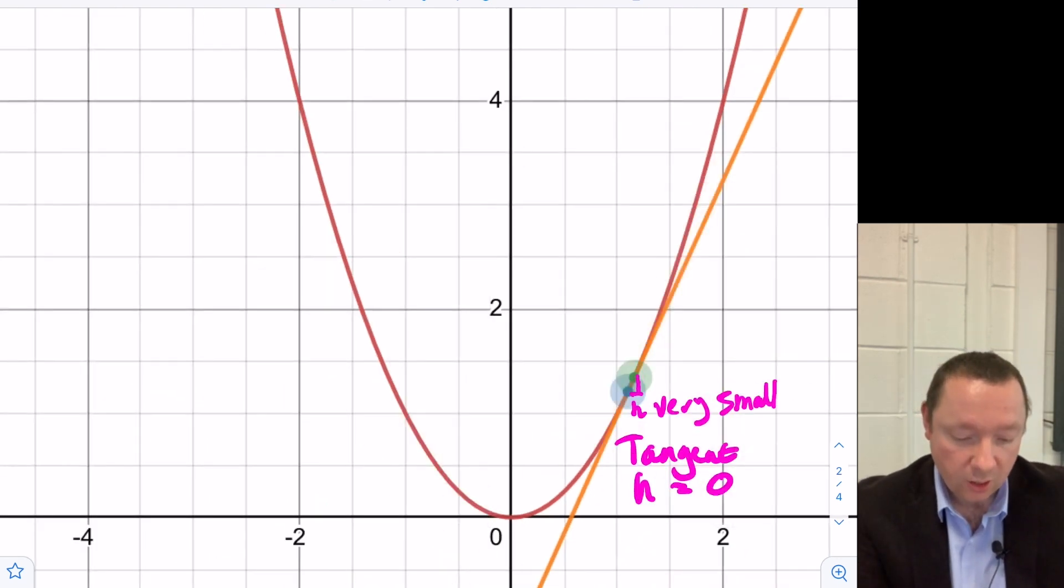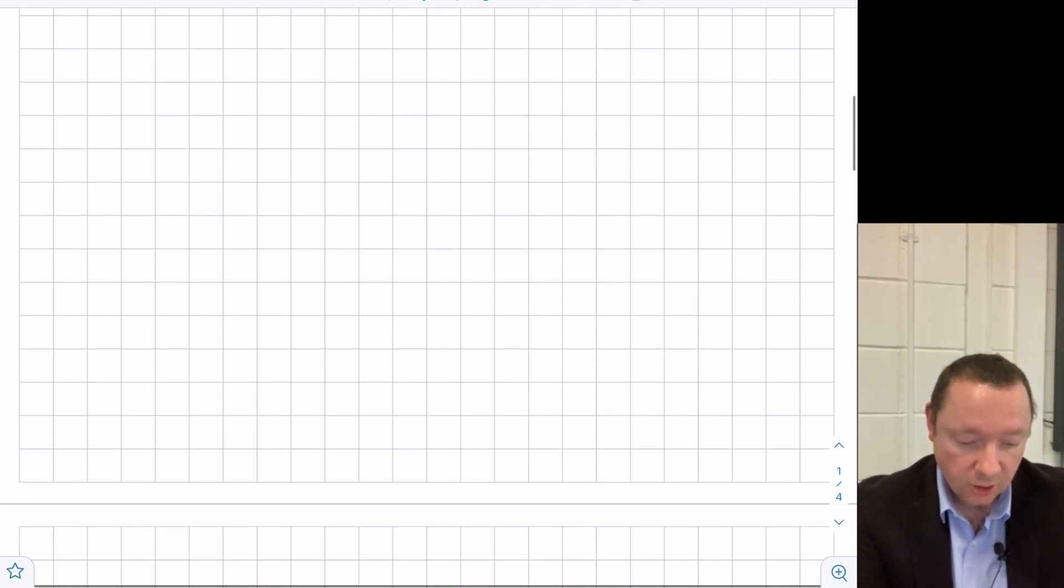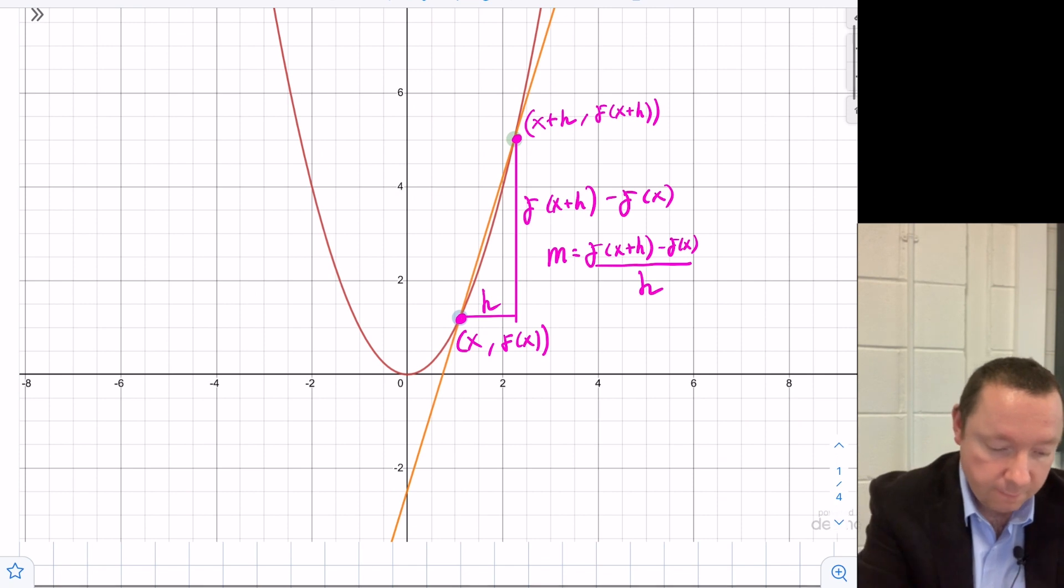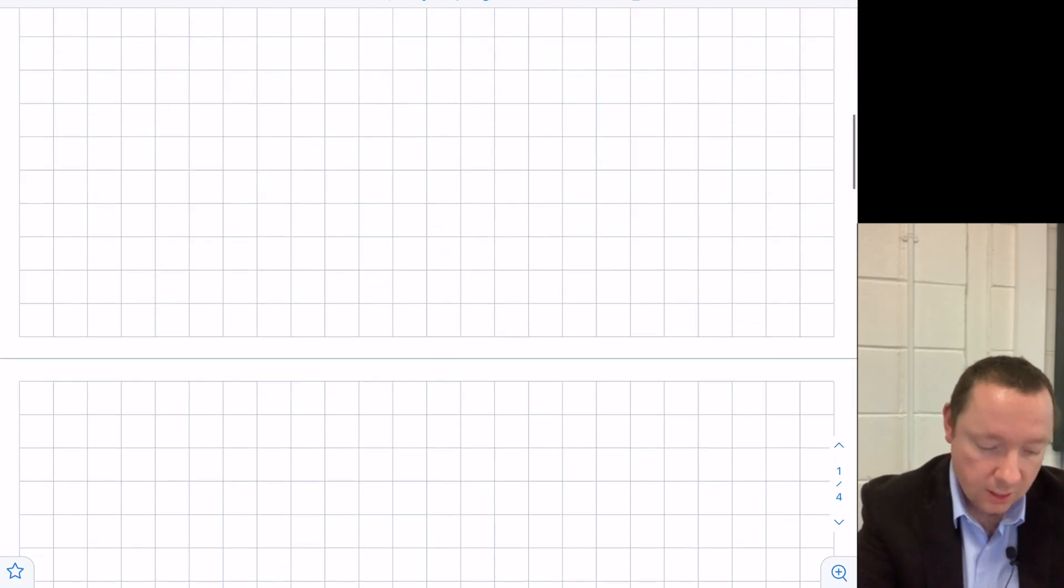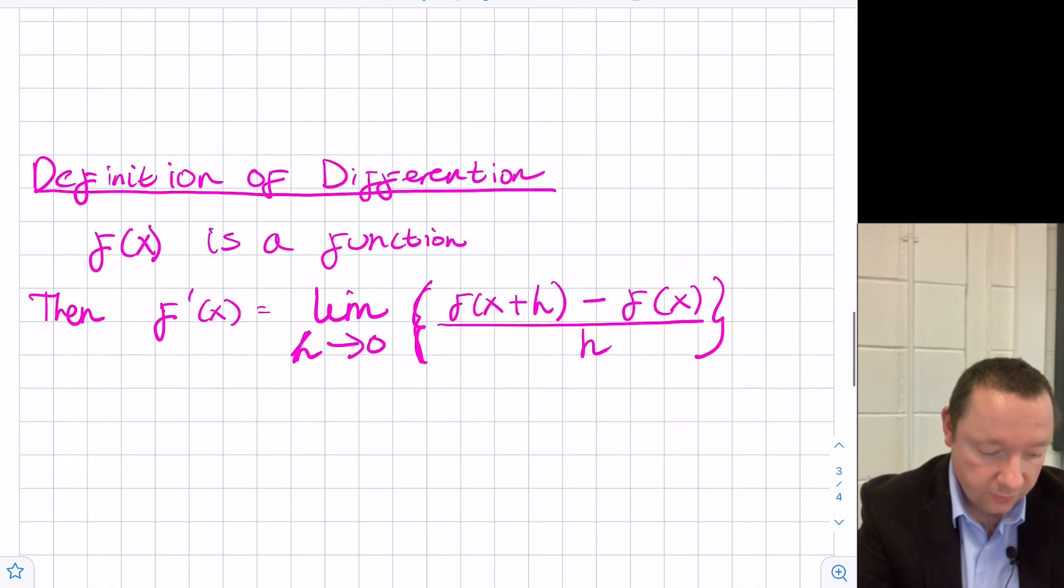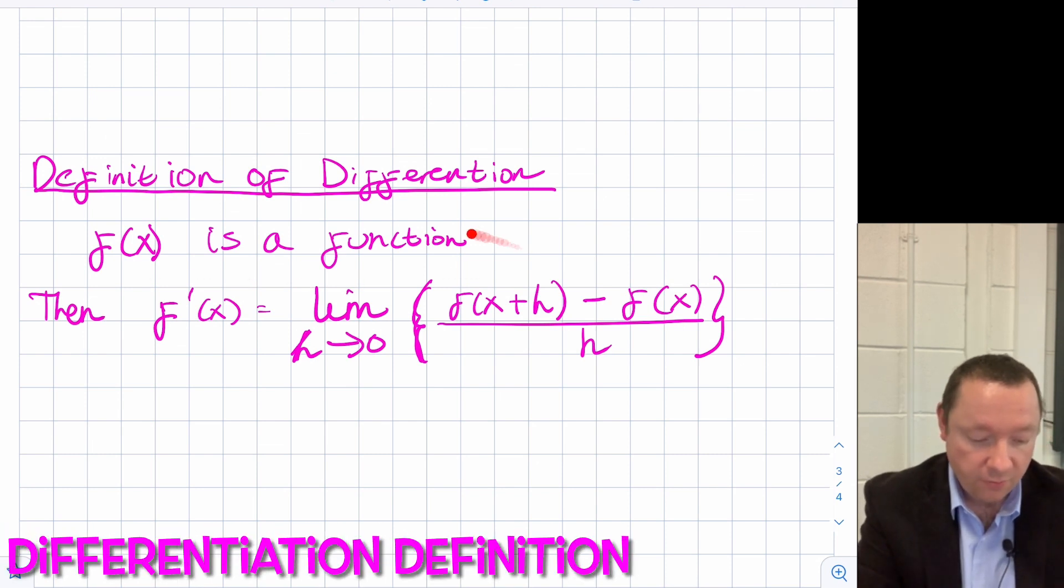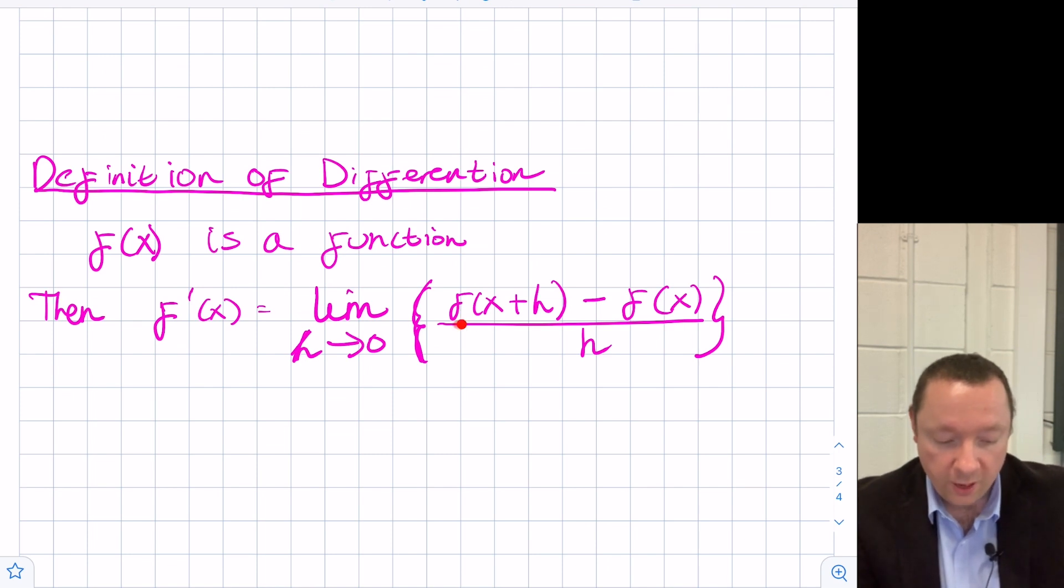So we've now essentially got a definition for differentiation. Differentiation is a gradient as h goes to zero. So as h becomes zero, approaches zero, the limit as h goes to zero. So in other words, our definition of differentiation for f of x being a function is f dash x equals the limit as h goes to zero of f of x plus h minus f of x all over h. Vertical over horizontal, but as h goes to zero to make it a tangent.